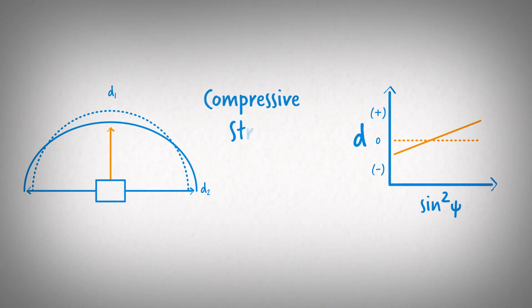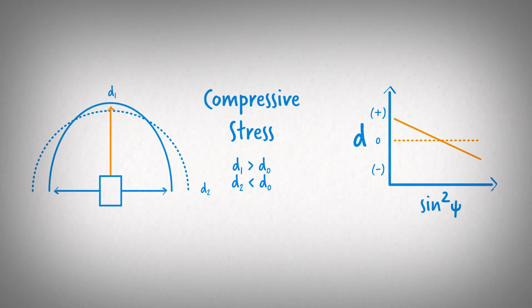A compressive stress in the plane of the sample surface occurs when the D-spacings in the plane are smaller than the stress-free D-spacing. As before, the Poisson effect will induce a change in the surface normal direction, causing an expansion in the atomic spacing. In this case, the sine-squared psi plot shows a negative slope.